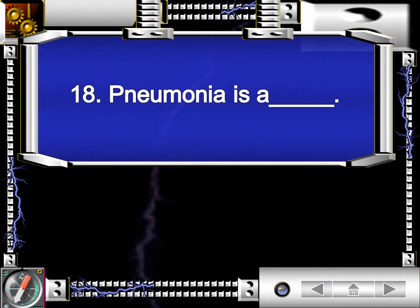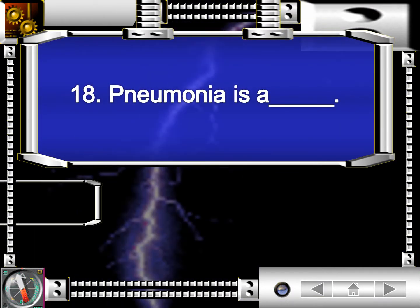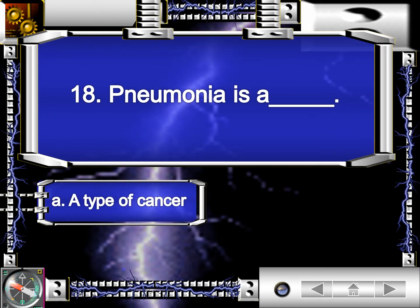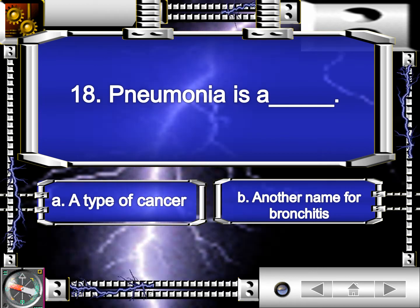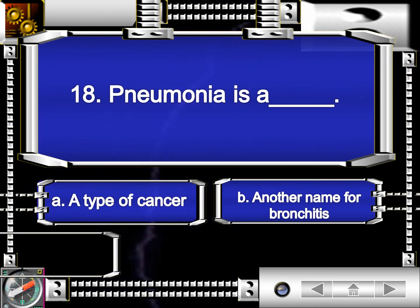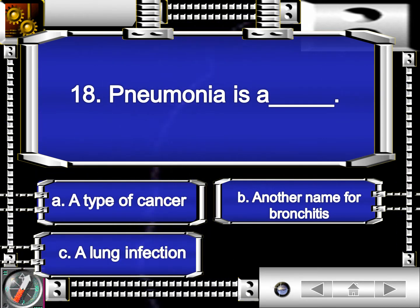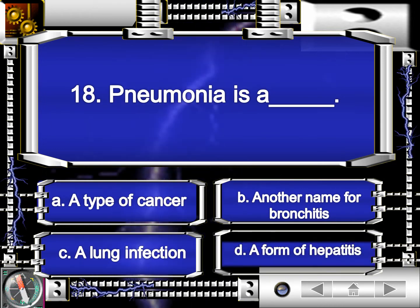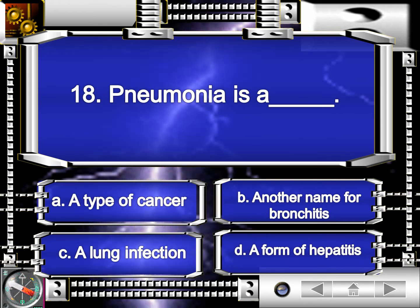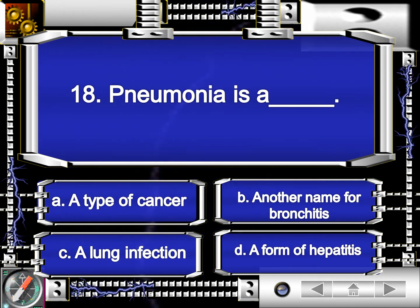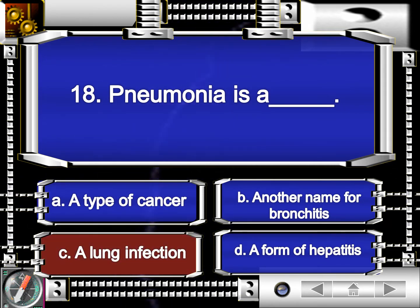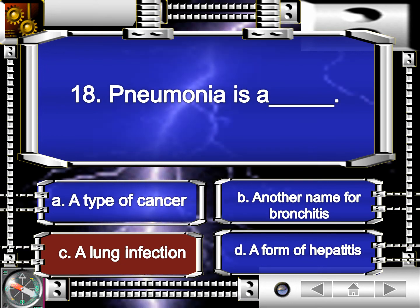Question number 18. Pneumonia is a blank. Is it A, a type of cancer? B, another name for bronchitis? C, a lung infection? Or letter D, a form of hepatitis? The answer is letter C, a lung infection.